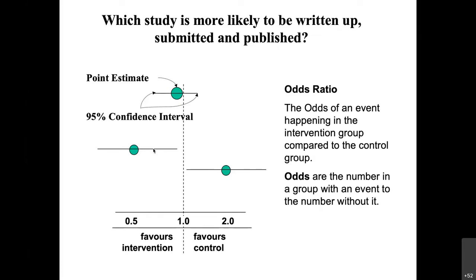So now I give you a question. You can see that the length of this line is roughly the same as the length of this other line, but the results are in opposite directions — one shows that treatment is better. It is very likely that these two studies have roughly the same sample size. What about this third study? The length of the line is smaller than in the other two studies.